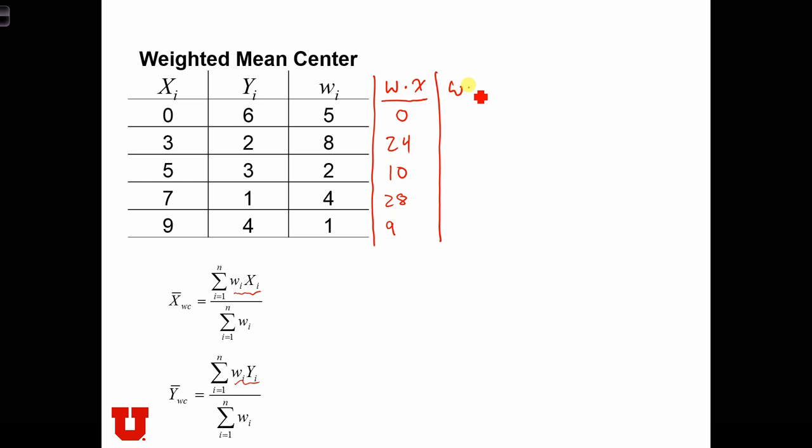The weighted y is simply the weight times the y. So we've got 30, 16, 6, 4, and 4.